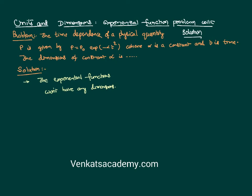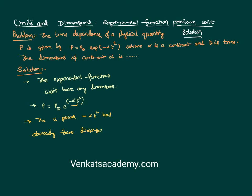So, whatever equation is given — p equal to p-naught times e to the power of minus alpha t squared — the exponent, that is minus alpha t squared, must have zero dimensions. So the power e to the minus alpha t squared has obviously zero dimensions.